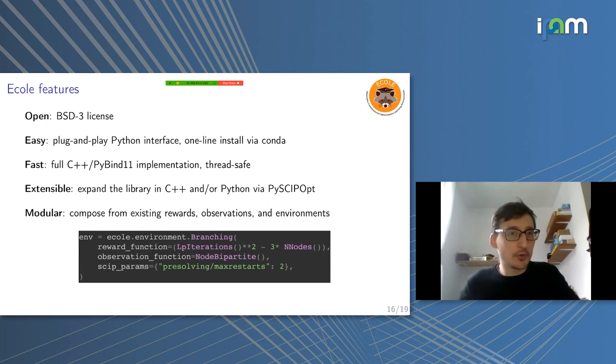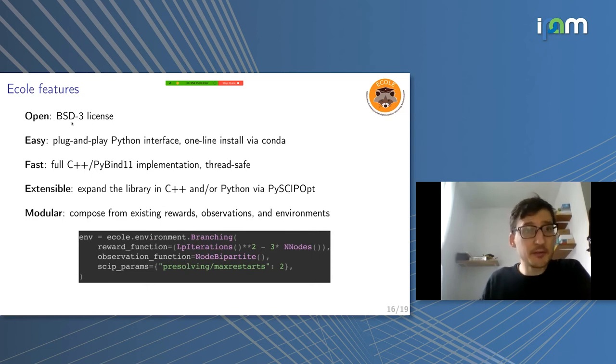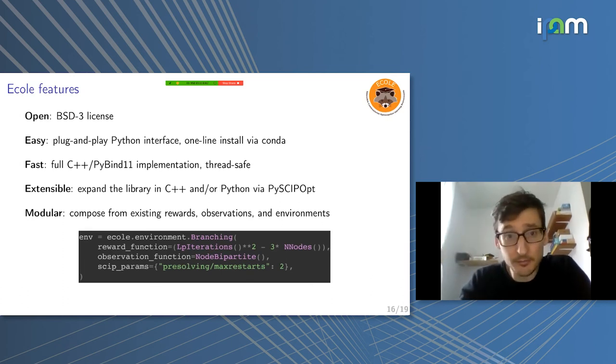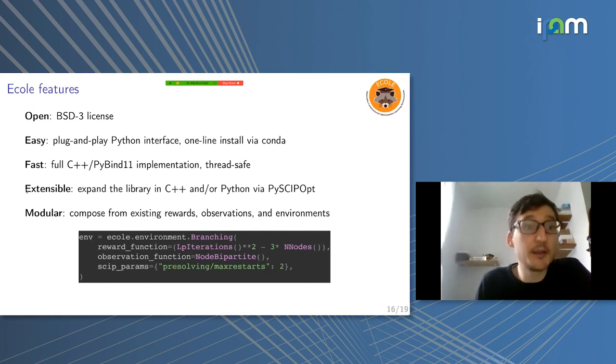Ecole does feature a few things. First, it's open. We went for the BSD free license, so you can do pretty much whatever you want with Ecole. It's easy to use. It's a Python interface. You can install it in one line via the Conda package manager or you can also just compile it yourself if you want. It's fast. It's entirely written in C++ and it's bound to Python using pybind11, but the whole implementation is in C++. And it's thread safe, which is nice if you want to do reinforcement learning and just sample a lot of trajectories in parallel.